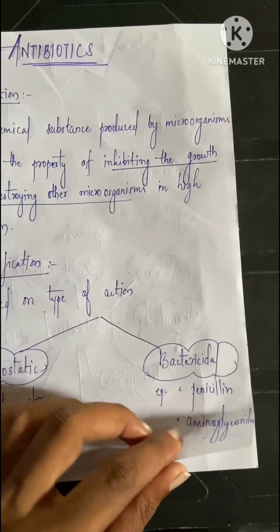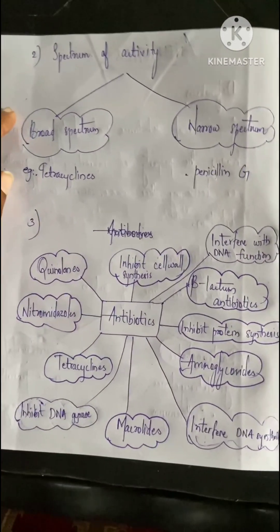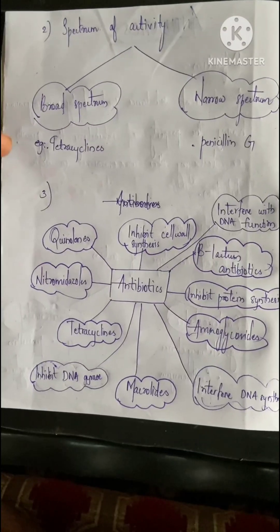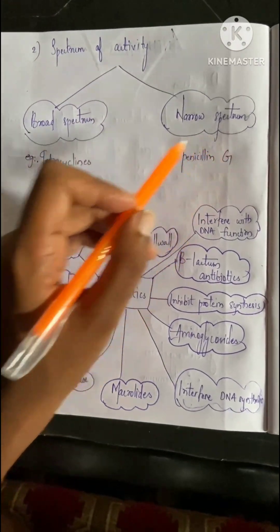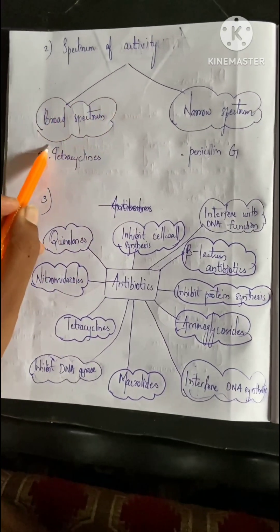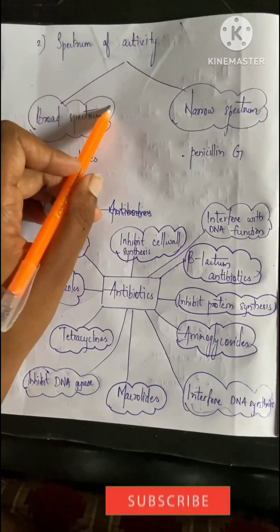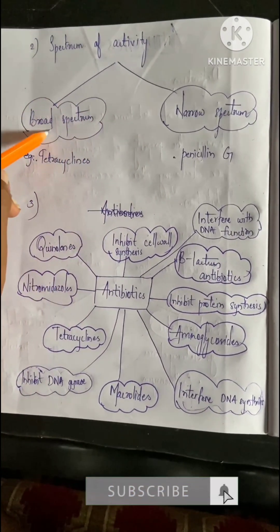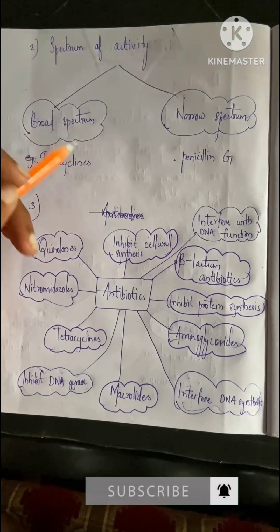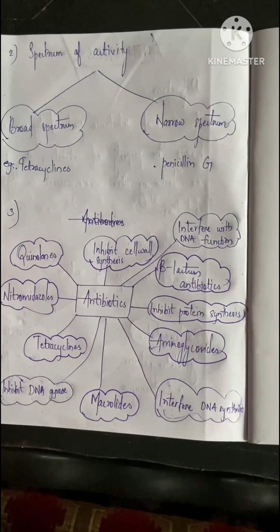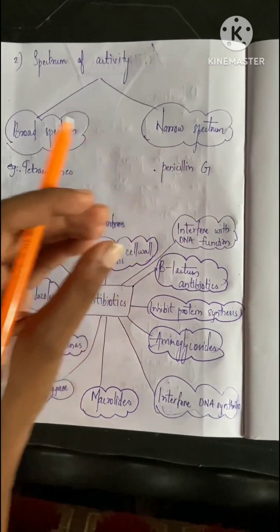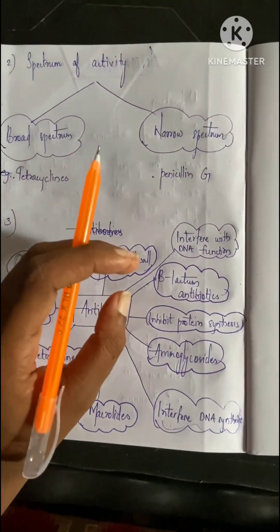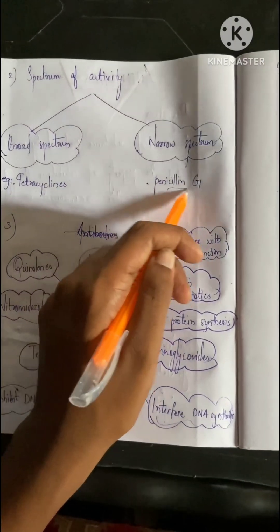Examples of bacteriocidal are penicillin and aminoglycosides. Next, based on the spectrum of activity, we can divide it into two: broad spectrum antibiotics and narrow spectrum antibiotics. Broad spectrum means a wide range of action - not a specific action. Examples are tetracyclines. Narrow spectrum means specific action - the example is penicillin G.